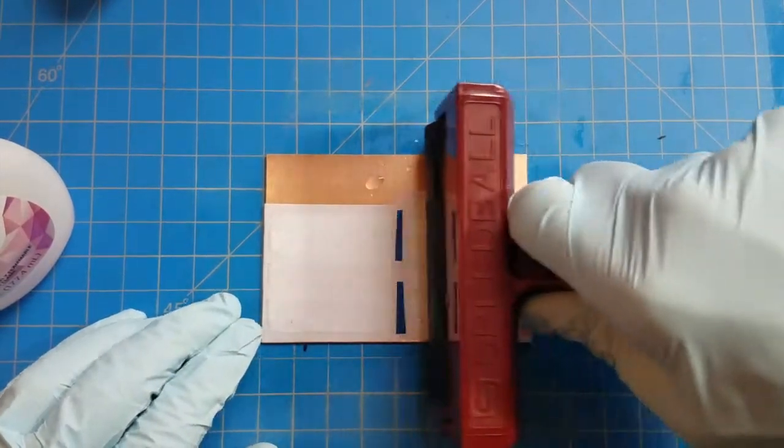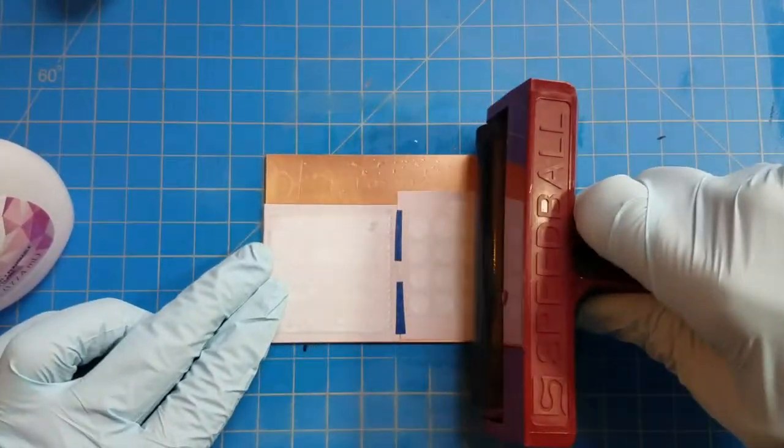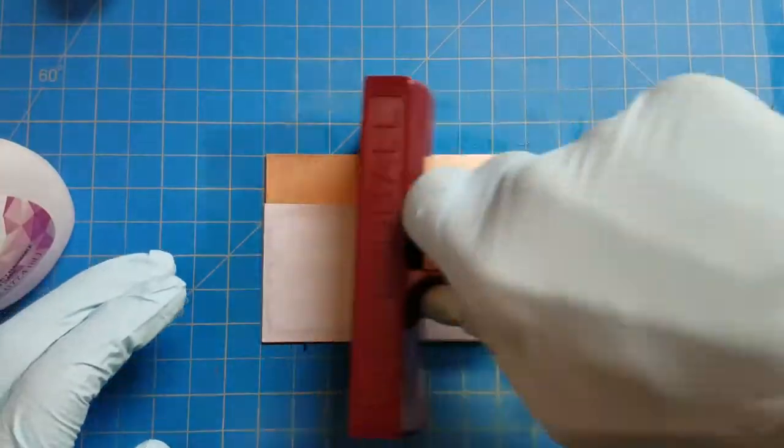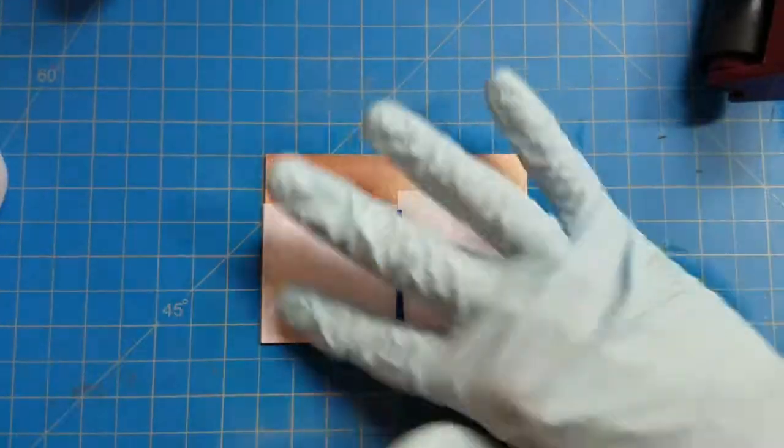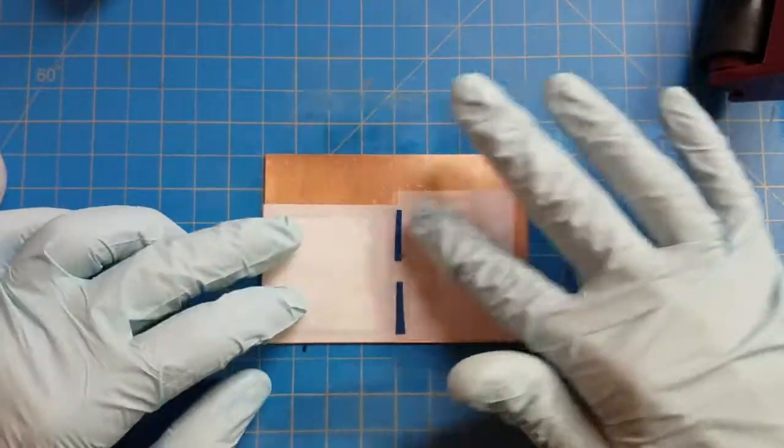Switch to something smooth. I'm using a brayer for block printing, but you can use a soda can or dowel just to put more even pressure on there. A little more nail polish remover doesn't hurt, keep pressing with your fingers.